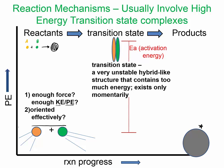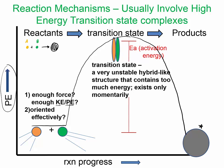What we're looking at here is called an energy profile. The two reacting molecules start off with a certain amount of energy — potential energy is on the y-axis. They need to raise to a certain level, called the activation energy, in order to create this transition state before they can make product. The way I drew this, the reaction is slightly exothermic, because the final energy is lower than what you started with.